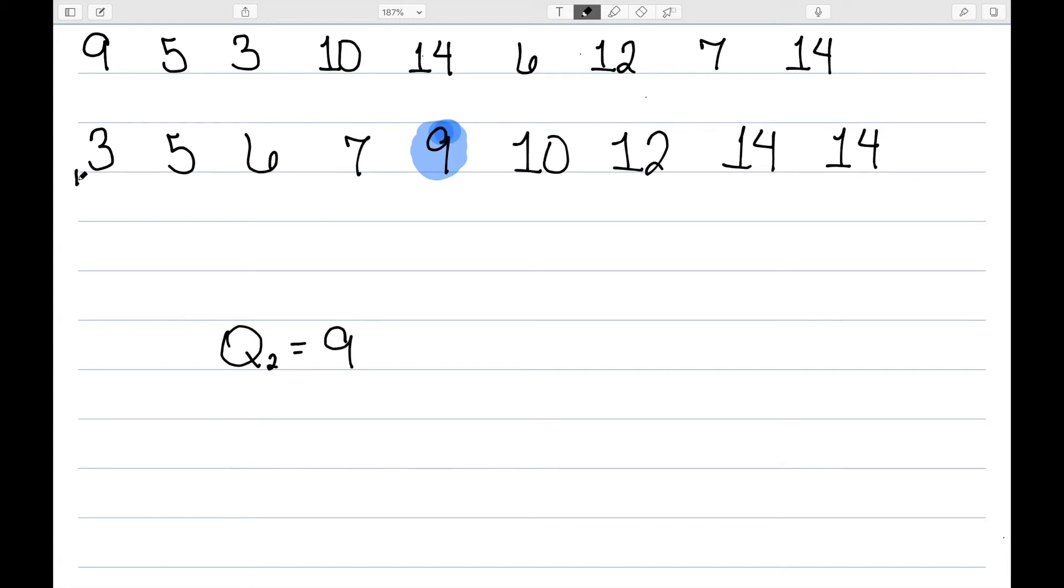For Q1, I'm going to look at just this lower half, everything below the median of 9. 3, 5, 6, and 7. The median of this would be halfway between 5 and 6, or 5.5. And then for Q3, I'm going to look at just the upper half, everything above the 9. For that, we would find halfway between 12 and 14, which would be 13. So here are my quartiles.